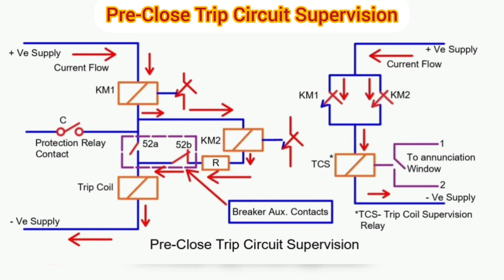Pre-close means breaker status before closing — the breaker is open. Thus the status of breaker contact 52A is open and contact 52B is closed. When the breaker is in open condition, current does not flow through 52A contact; instead, current finds its path through the breaker auxiliary NC contact, KM2 and KM1. Current flowing through KM1 and KM2 energizes both relays. The positive supply routes through the contacts of KM1 and KM2 and energizes the TCS relay. The NC contact of TCS becomes NO and no annunciation window glows, showing that the trip circuit supervision circuit is healthy.